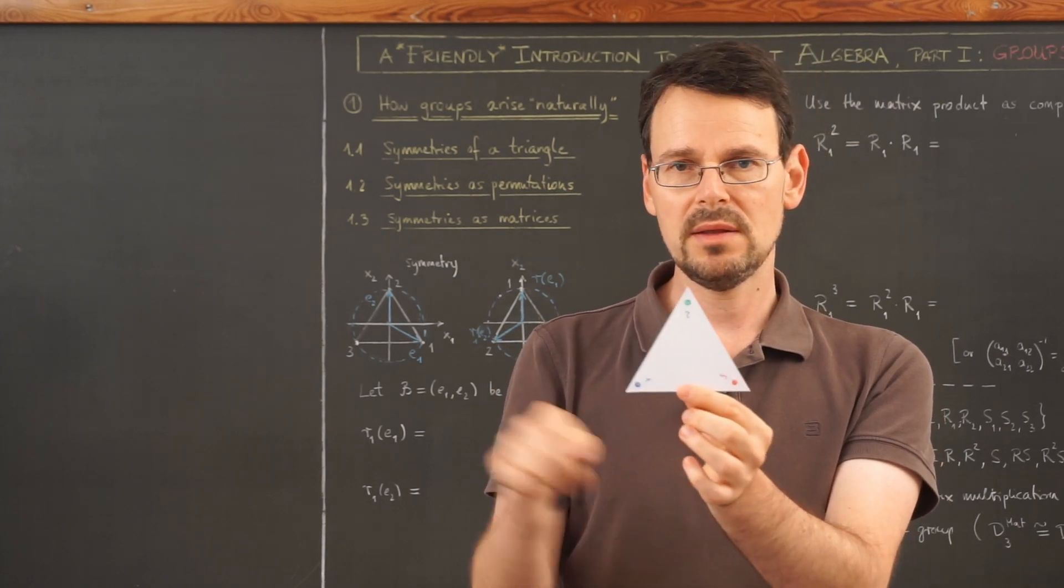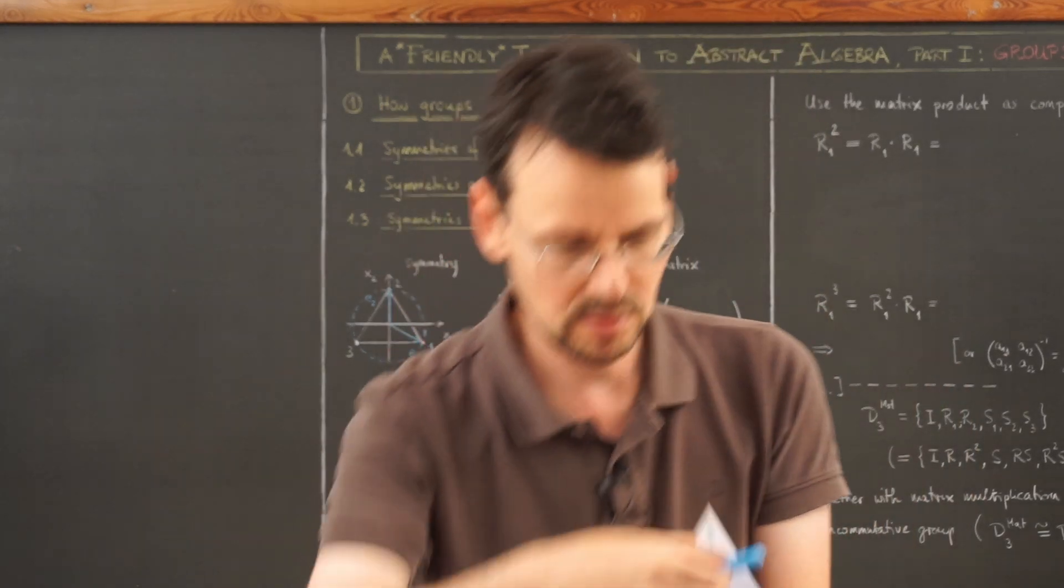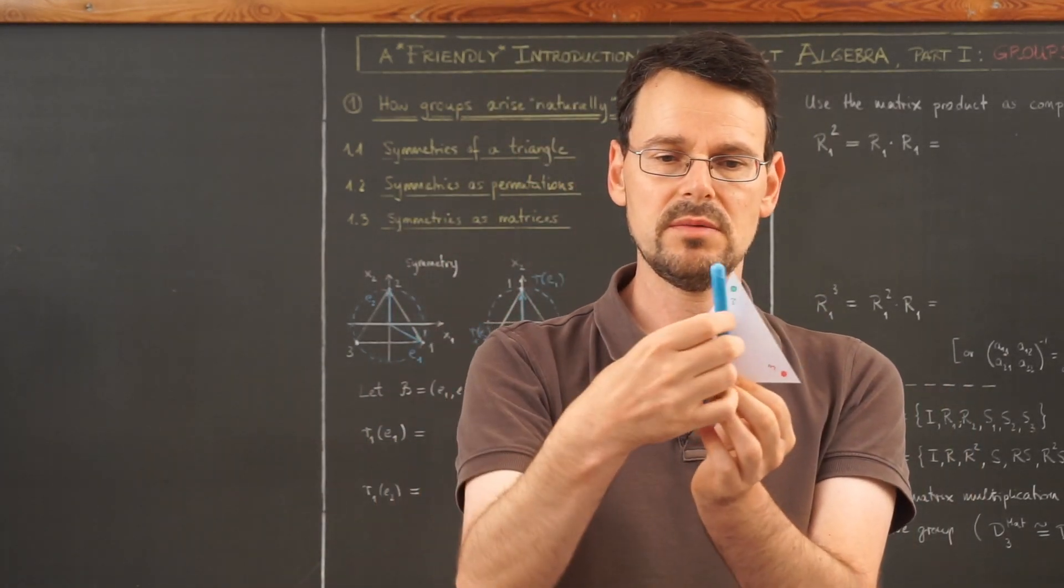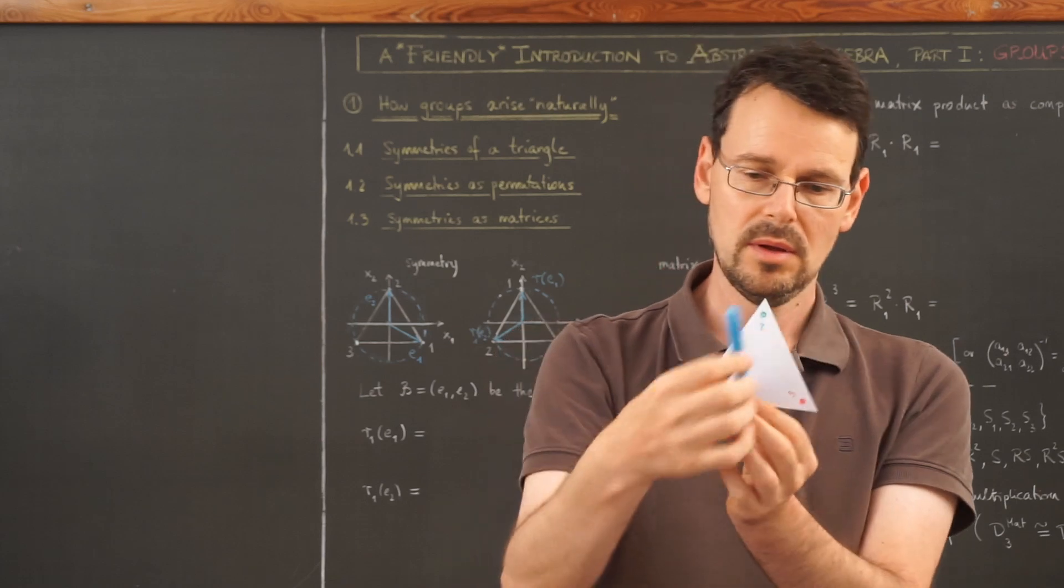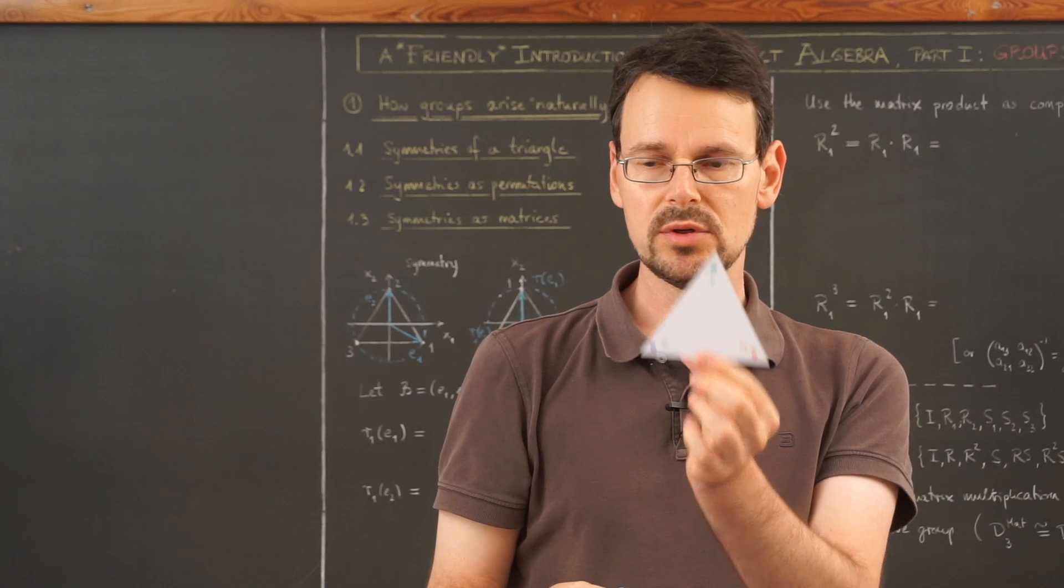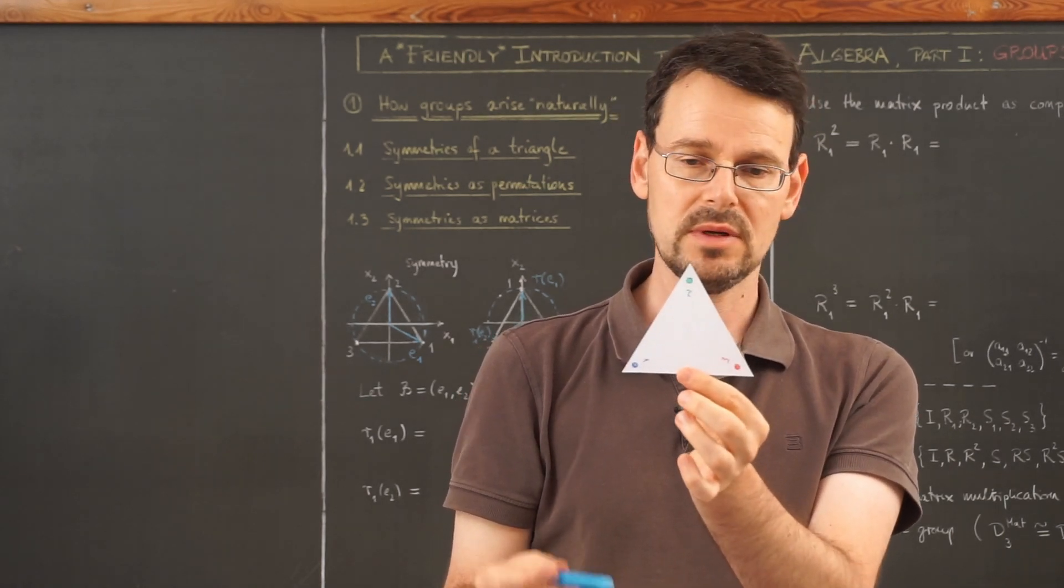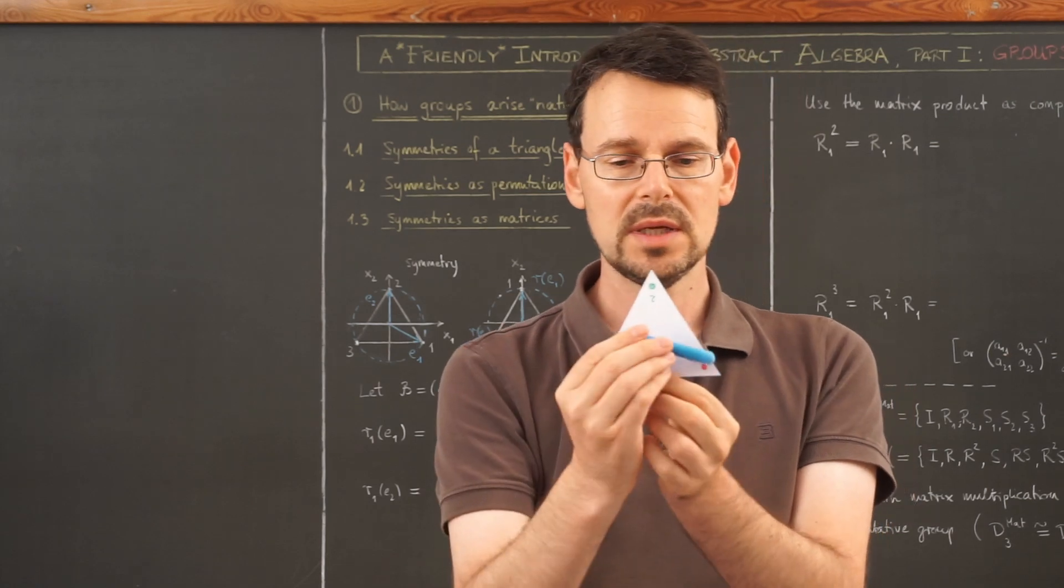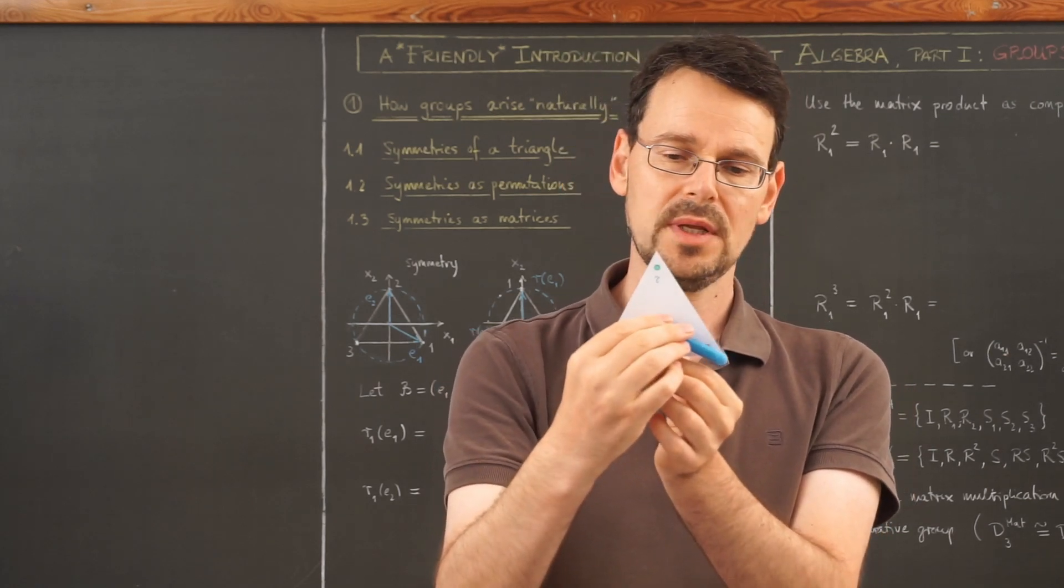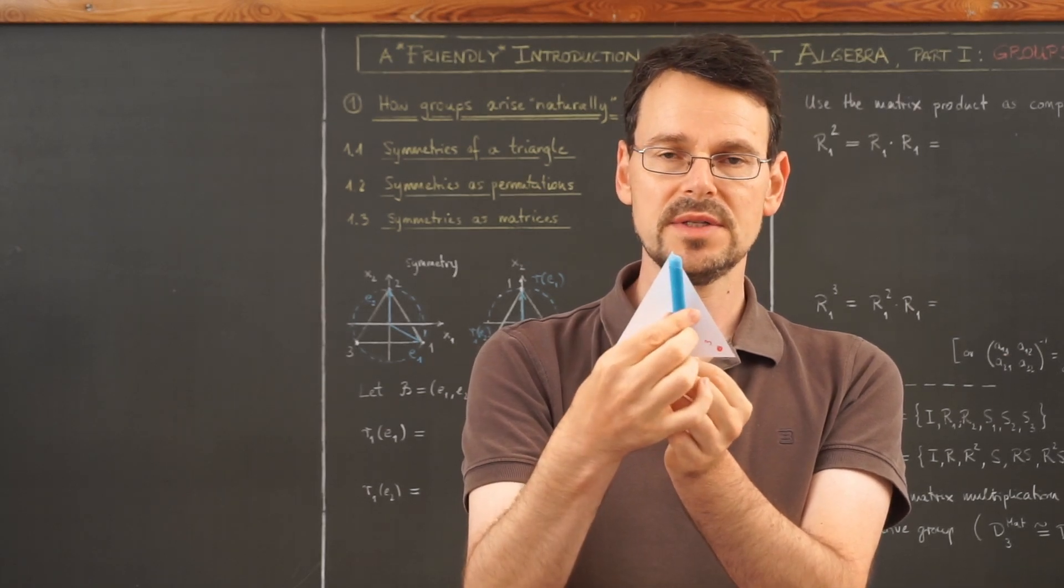Usually we take the canonical basis, like here, this basis vector and this, orthogonal and of length one. This time we take a different approach, we adapt the basis to our triangle, to the symmetry of our triangle. We take this here as our first basis vector and this here as our second.